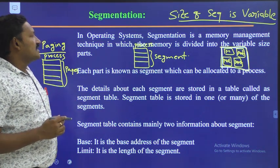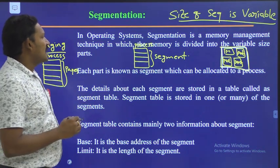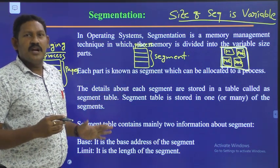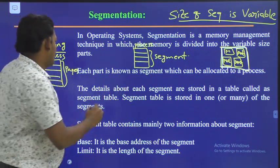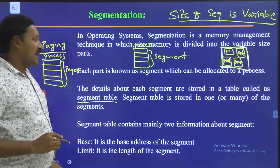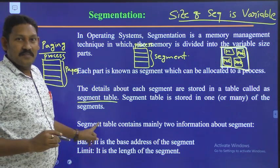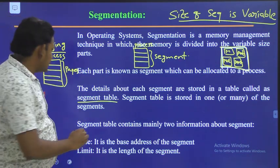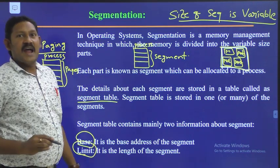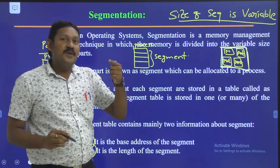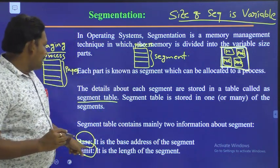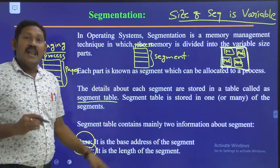That is the main advantage of using segmentation. The details of the segments are kept in a table called the segment table. The segment consists of two things: base and limit. Base specifies the starting address location, and limit specifies the length of the segment.